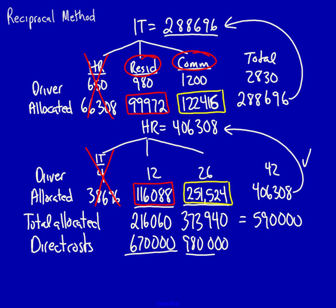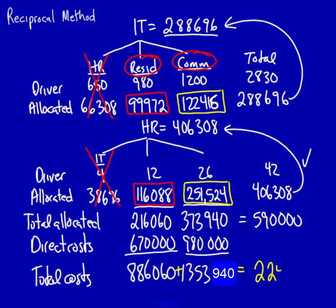And that will get me the total overhead costs that the operating departments now have to cover by generating revenue. 886,060 and 1,353,940. Add those together and it better equal 2,240,000. And it does.